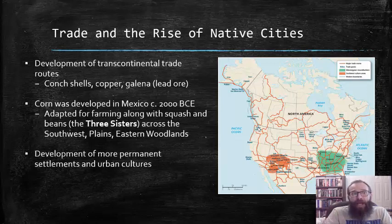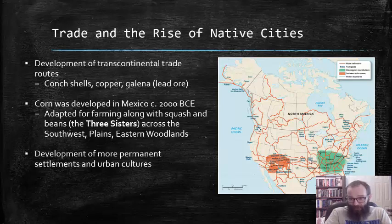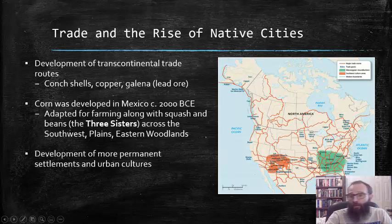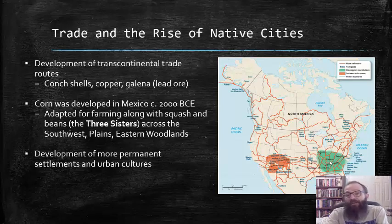Over time, there began to be the development of transcontinental trade routes that stretched all across North America. Even though these peoples were very diverse and had their own specialized economies, they certainly had communication with each other and traded all sorts of various goods, including conch shells, which were thought to have been used as some form of currency, copper, galena, which is a form of lead ore, as well as other sorts of goods and trade items.